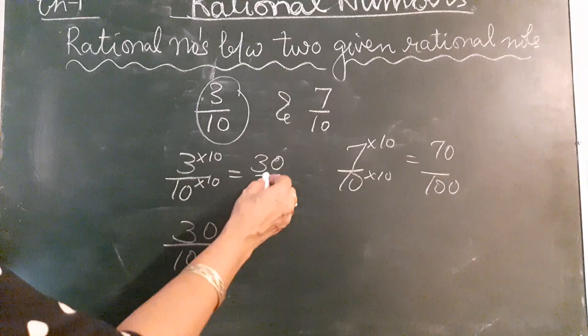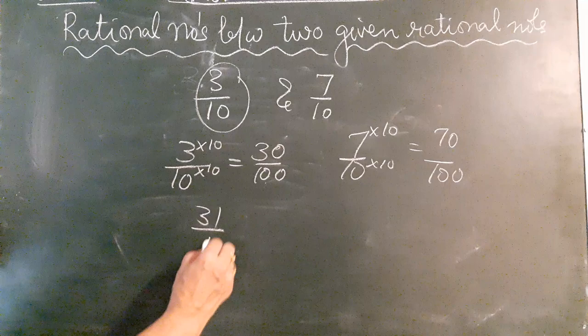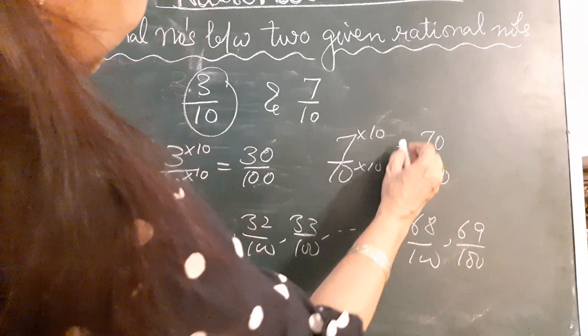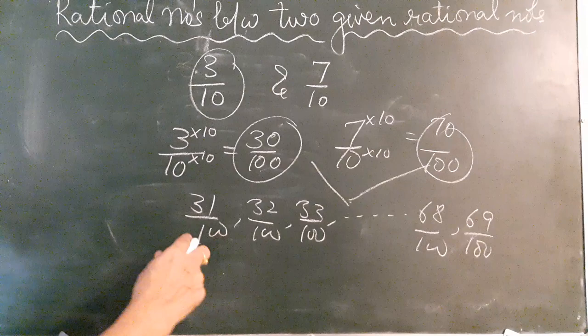So we can write the numbers between them. We see that 31/100, 32/100, 33/100, and so on up to 68/100, 69/100 — these numbers come between the two given numbers. These are a total of 39 numbers.